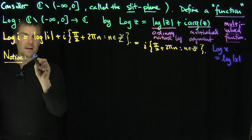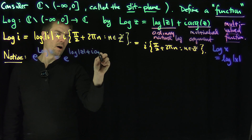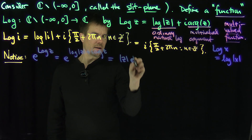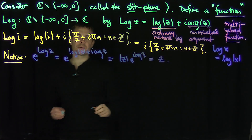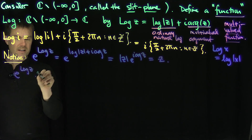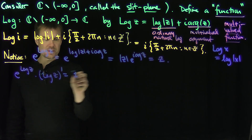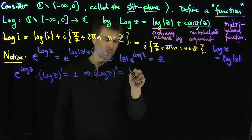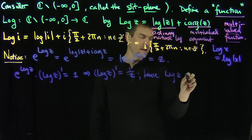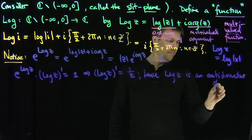Notice: if I look at e to the LOG of z, that is e to the ordinary log of the modulus of z plus i times the argument of z — this always gives me the same value. This is going to be the modulus of z times e to the i times argument of z, and that's just the representation of the complex number z. So e to the LOG(z) is just z. If I differentiate this with respect to z, I get e to the LOG(z) times the derivative of LOG equals 1, and since e to the LOG(z) equals z, this says LOG'(z) = 1/z. Hence LOG(z) is an antiderivative of 1/z.